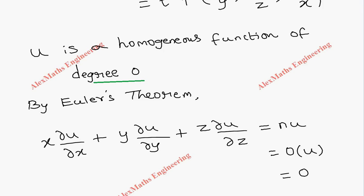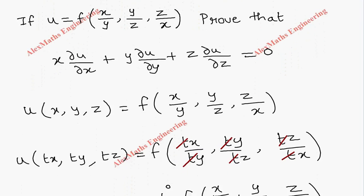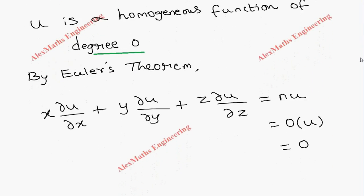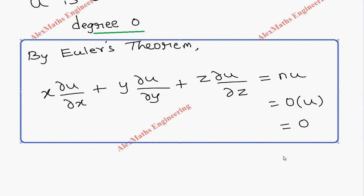So in the question, we need to prove that x(∂u/∂x) + y(∂u/∂y) + z(∂u/∂z) = 0 for the given function u. We proved this by showing u is a homogeneous function, finding its degree, and applying Euler's theorem to get the required proof.